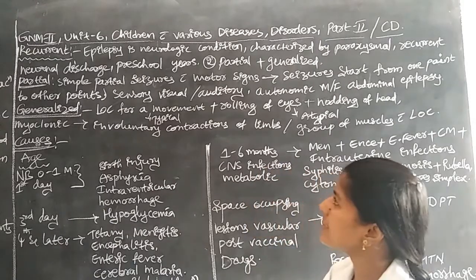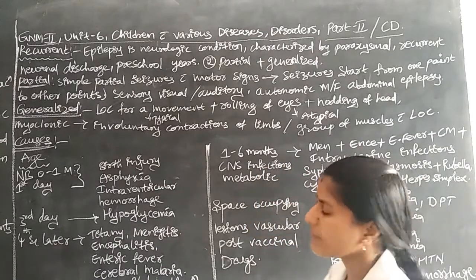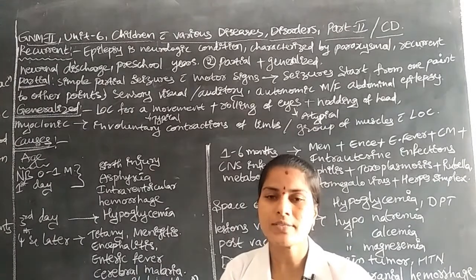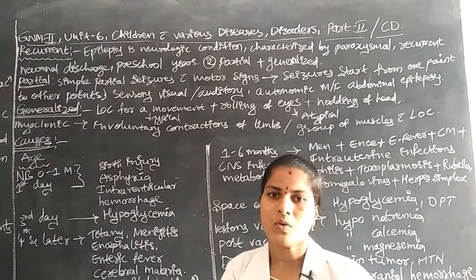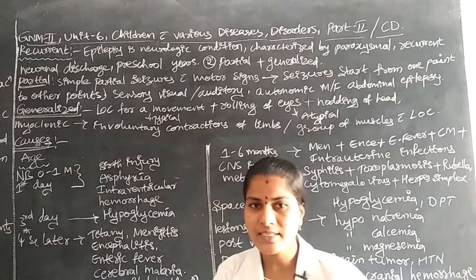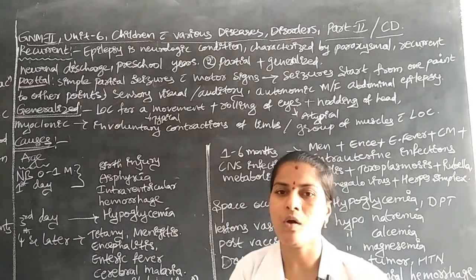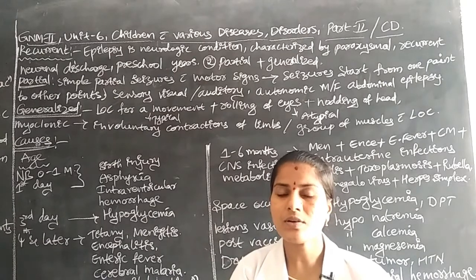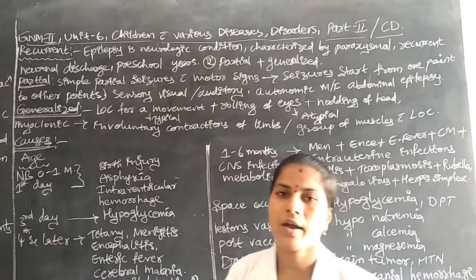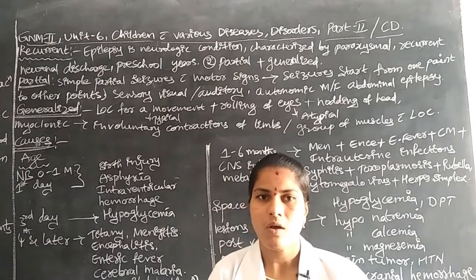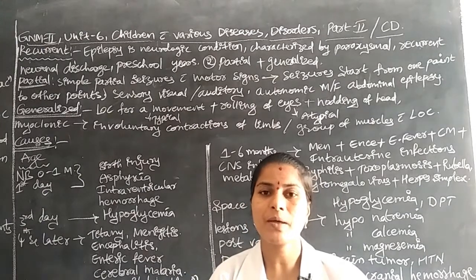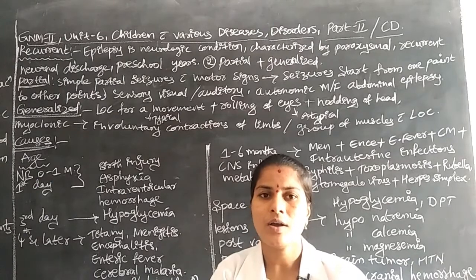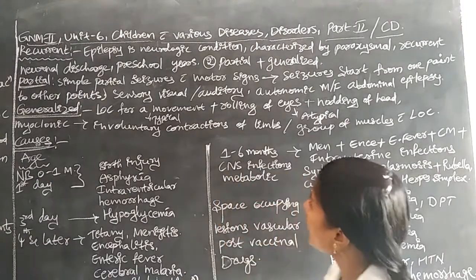Epilepsy is a neurological system problem. Mainly this disease condition causes some abnormality to the nerves. The nerves are receiving excessive impulses or abnormal impulses from the brain, which is why this disease condition is classified under the neurological system.